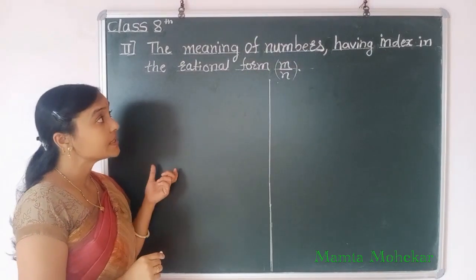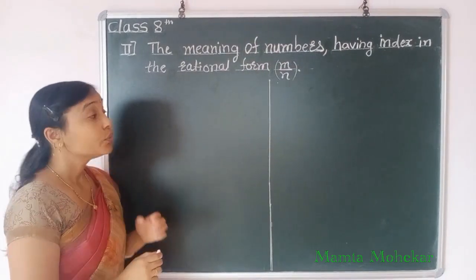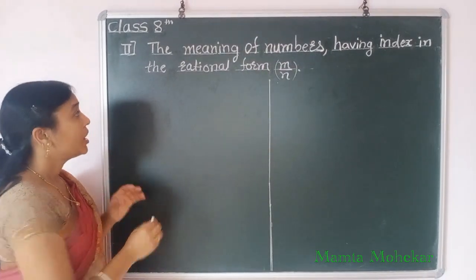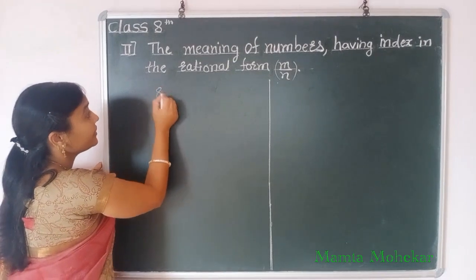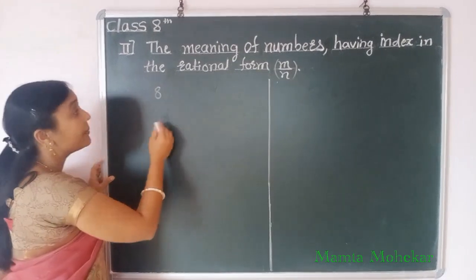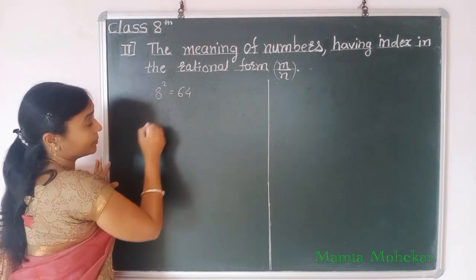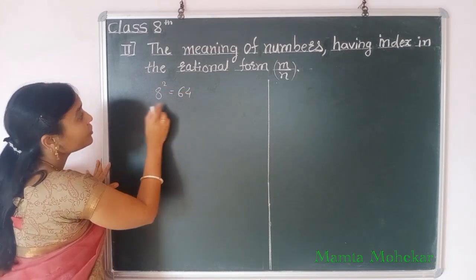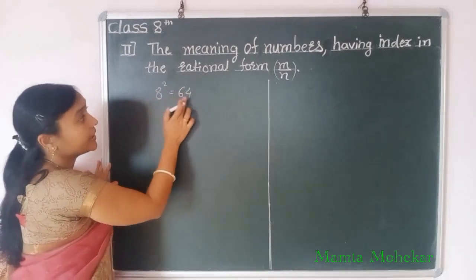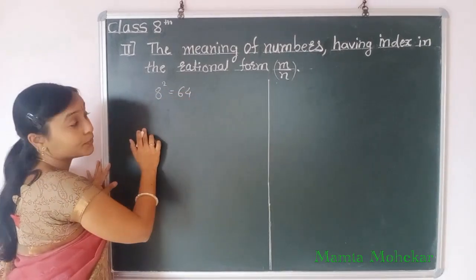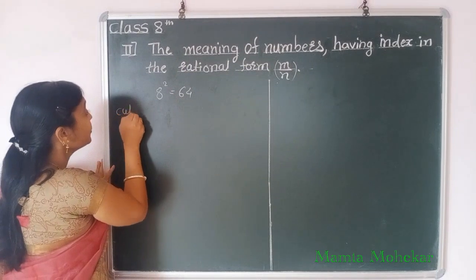For this, we take one example. We know how to write down the square. We take the example: 8 squared equals 64. So we read it as: the square of 8 is 64.